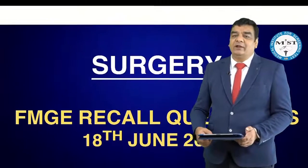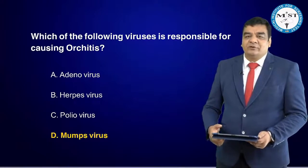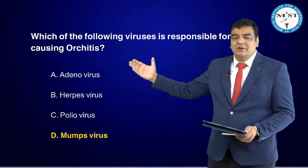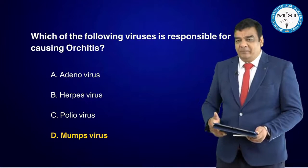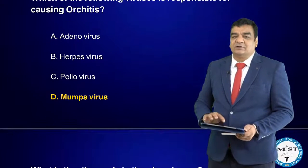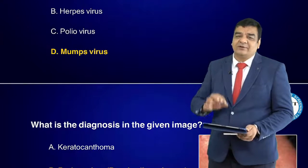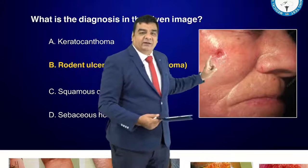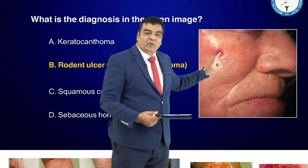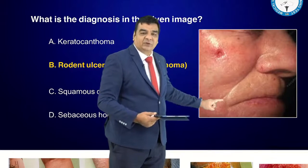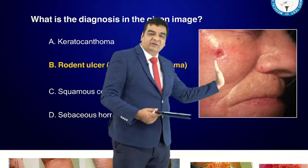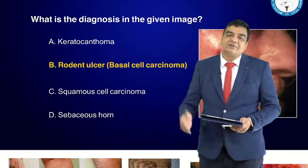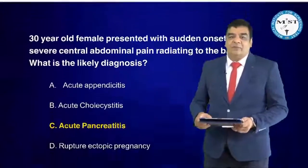We've also incorporated integrated questions in surgery. For example, which virus is responsible for causing orchitis? This was a very simple single-liner question — it is the mumps virus that causes orchitis. Another question asked for a diagnosis from an image showing a malignancy in the face. Malignancies above the line of the face are generally basal cell carcinomas, or rodent ulcers — again a straight single-liner.